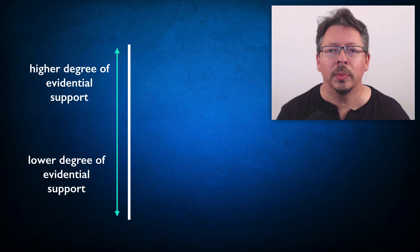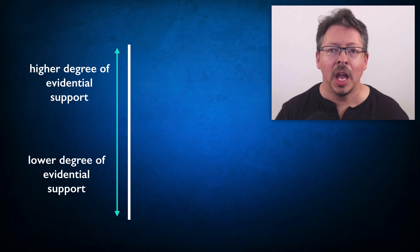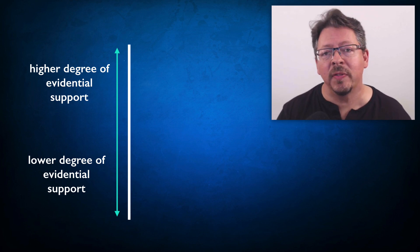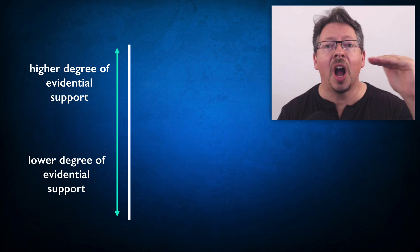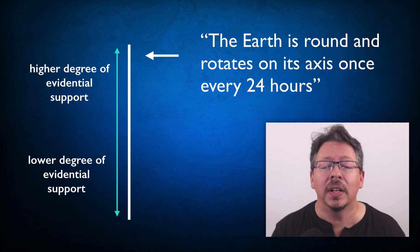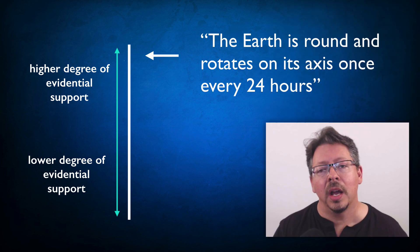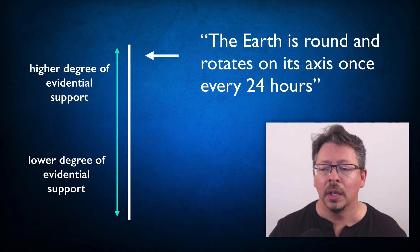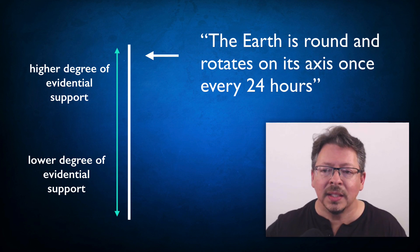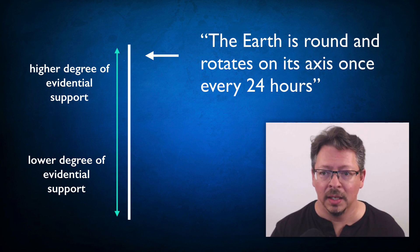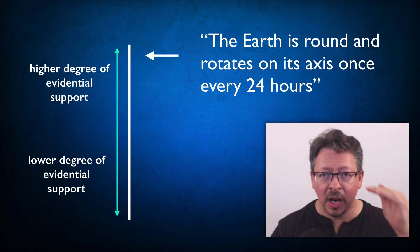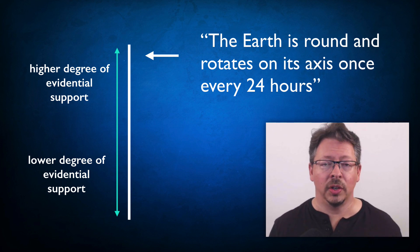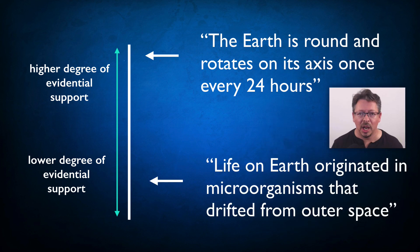The key idea is the notion of evidential support: how much evidence is there to support our belief or acceptance of a particular claim? We can imagine a scale that ranges from lower degrees of support to higher degrees of support. Given a claim like this one — the earth is round and rotates on its axis once every 24 hours — we can ask whether this claim ranks high or low on this scale. Do we have strong reason or evidence to think it's true? Unless you're a flat earther, this should rank very high. Other claims will rank lower.